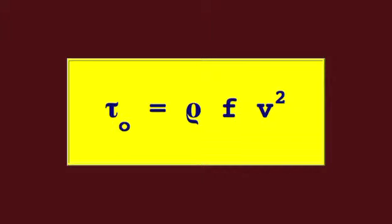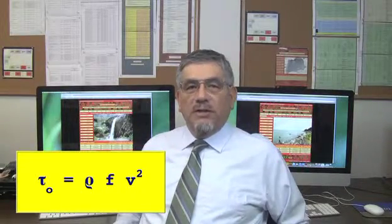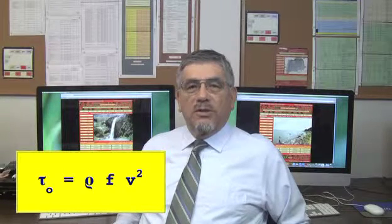The quadratic resistance law is tau sub knot equals rho f v squared, in which tau sub knot is the bottom shear stress or tractive stress, rho is the density of water, and f is the dimensionless Chezy friction factor.